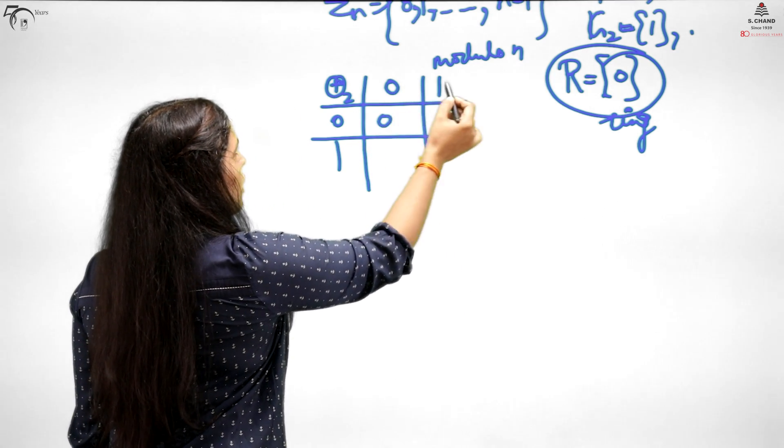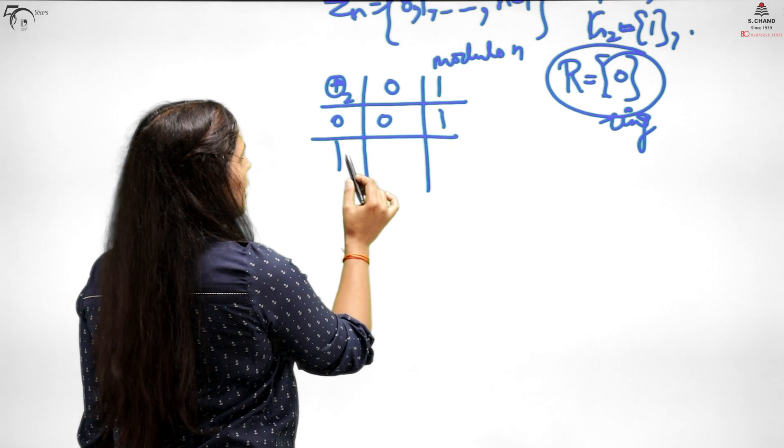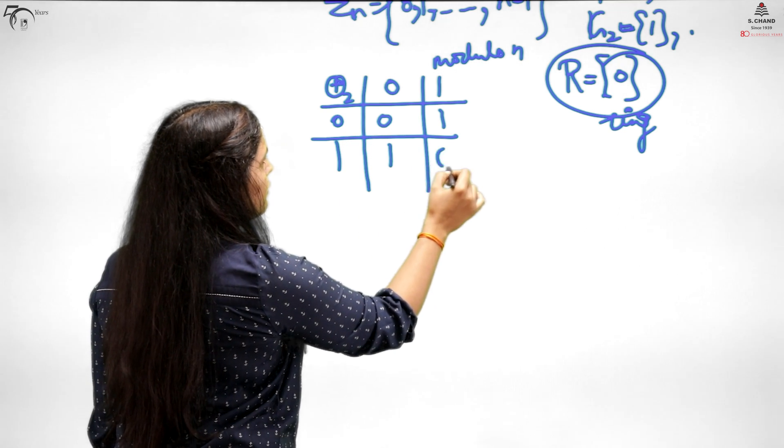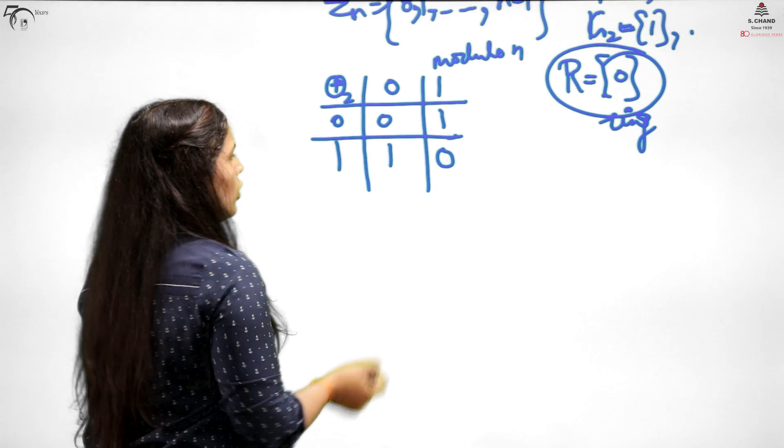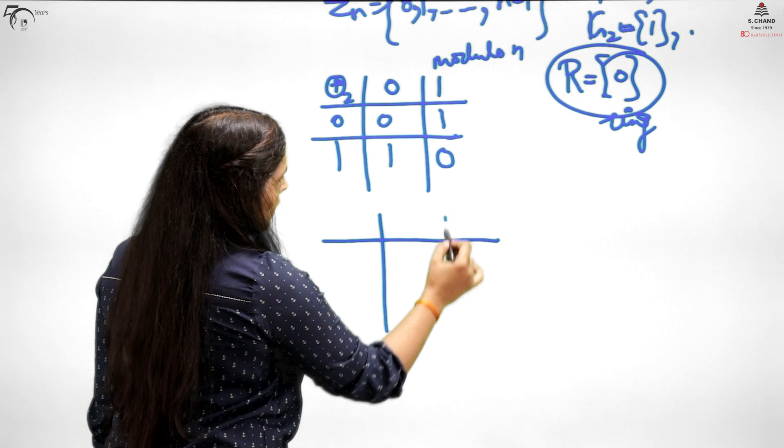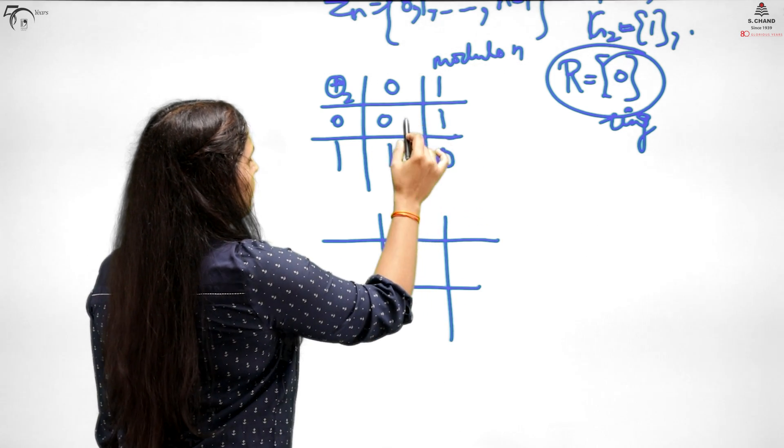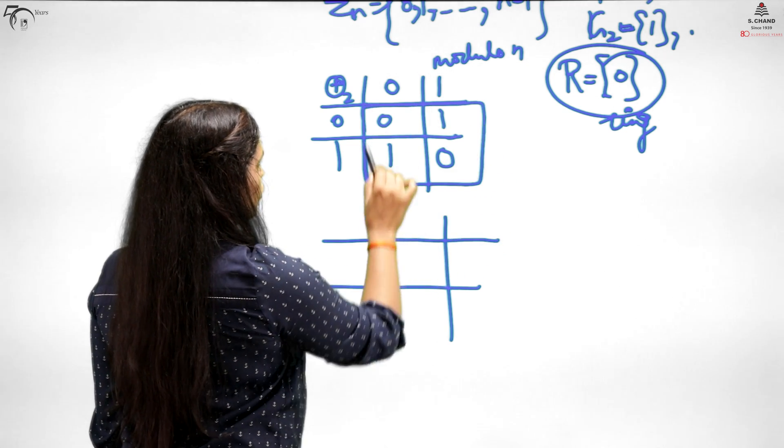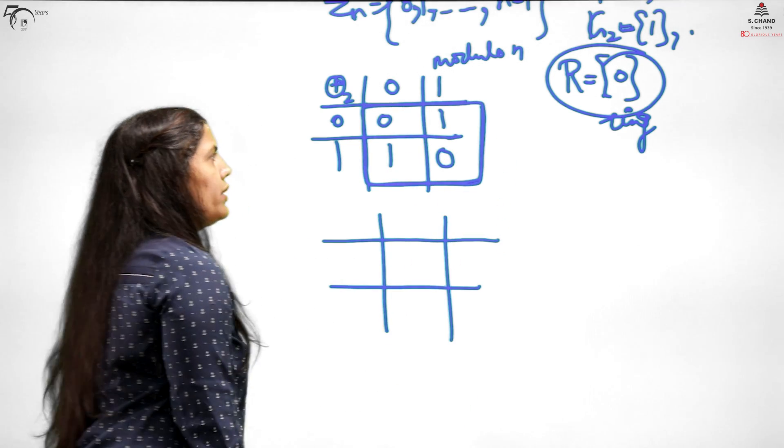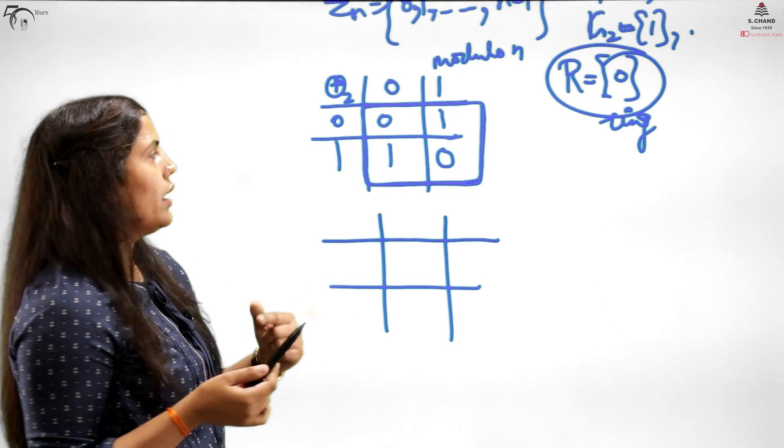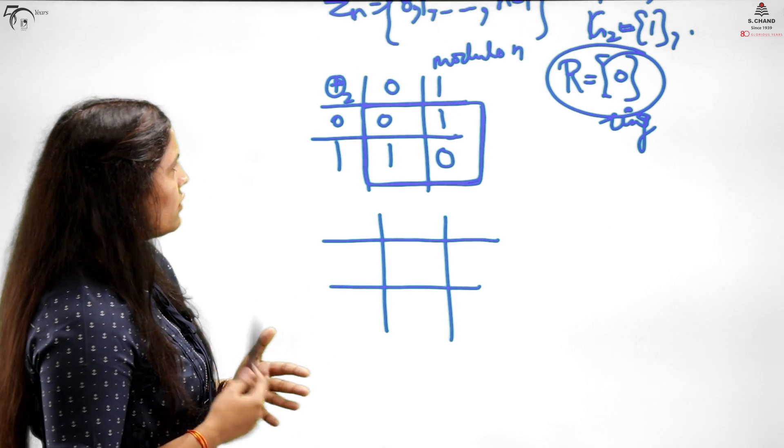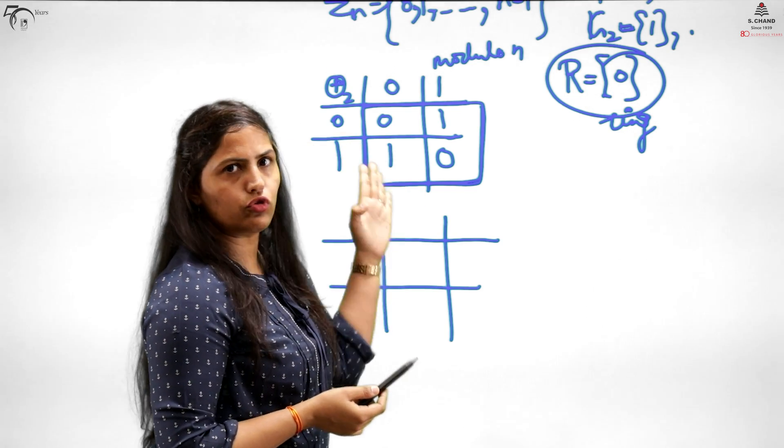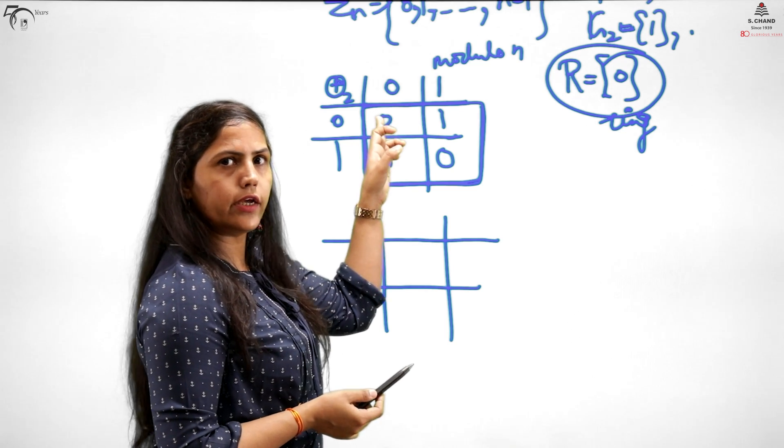I told you that if elements are completely different row-wise and column-wise, just look at this portion. Look at the rows and columns: 0, 1 repeats. If this happens, then 100 percent closure holds, associative holds.